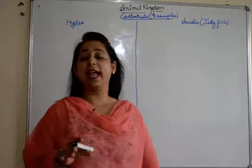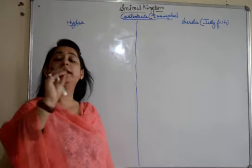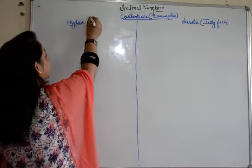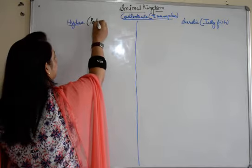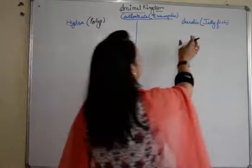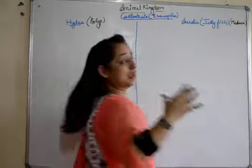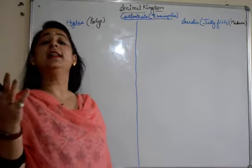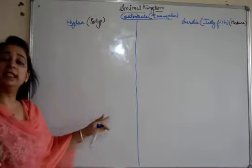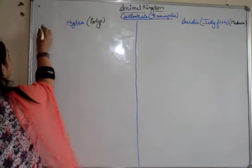As already discussed in the characteristics, they are colonial known as zooids, and they show polyp condition and medusa condition. We have taken these examples because Hydra is the only polyp in the phylum cnidarians, and Aurelia is a medusa. Aurelia is in the shape of an umbrella, showing medusa colony, and Hydra is a polyp. Starting up with Hydra first of all.